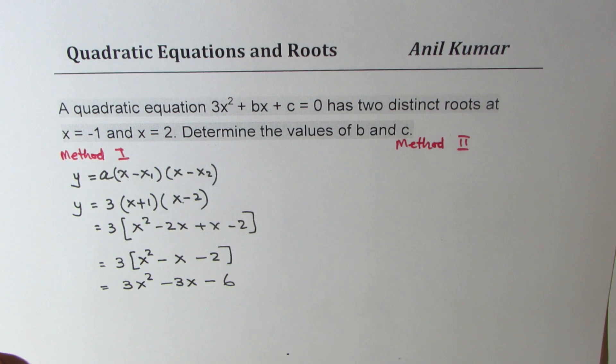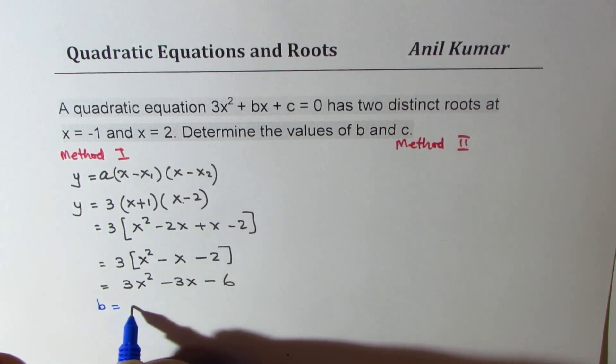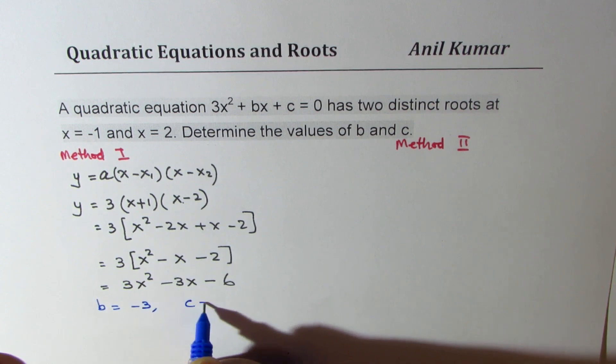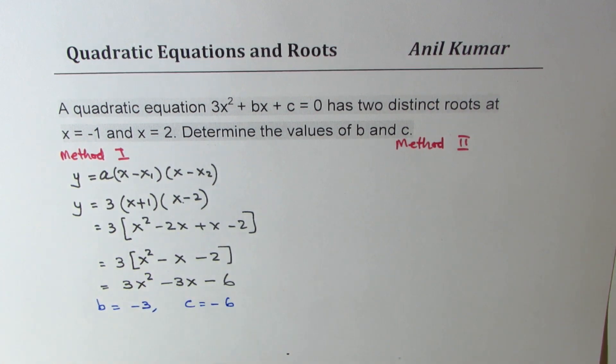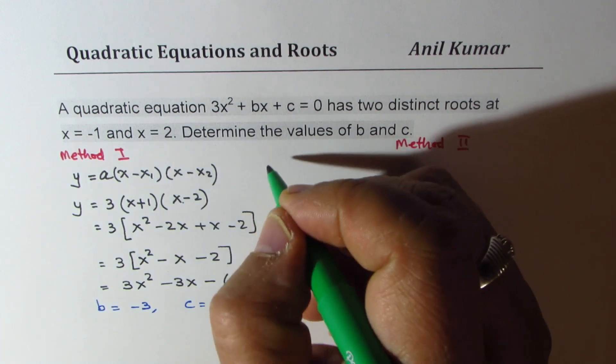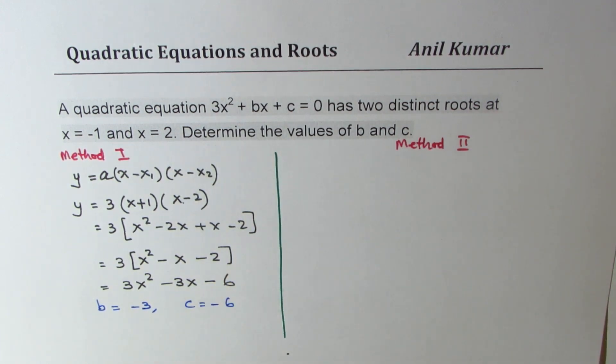And if you compare, you have your solution, which is b equals minus 3 and c equals minus 6. So this is straightforward method, which can be used very easily.